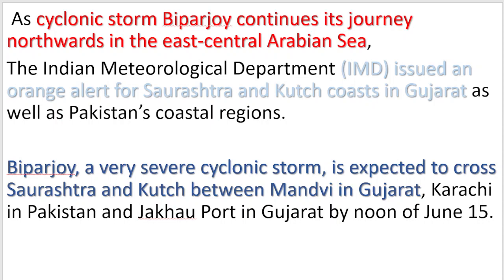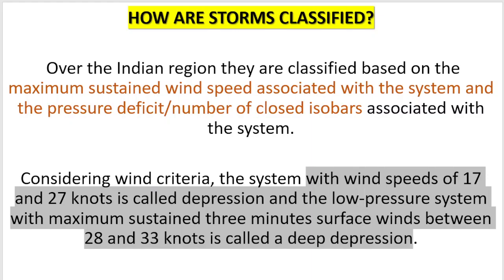Now let's see how cyclones are classified in the Indian region. Classification is based on maximum sustained wind speed. Here, pressure deficit and other such factors are also considered. If the cyclone's wind speed is between 17 and 27 knots — and one knot equals approximately 1.8 km/h — it is called a depression.